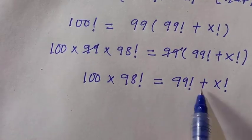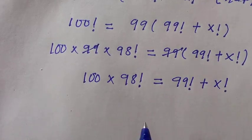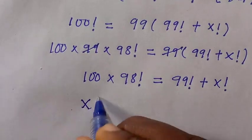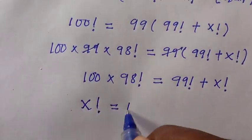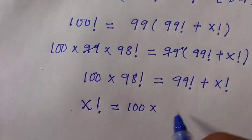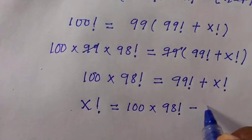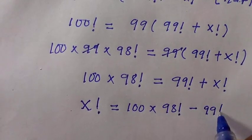What we do is we try to make x factorial the subject of the formula and we transfer this one here. We have x factorial equals 100 multiplied by 98 factorial minus 99 factorial.